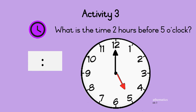Activity three: what is the time two hours before five o'clock? The minute hand must now make two anti-clockwise turns. After one turn, the time is four o'clock, and after a second turn, the time is three o'clock. So two hours before five o'clock is three o'clock. Well done!